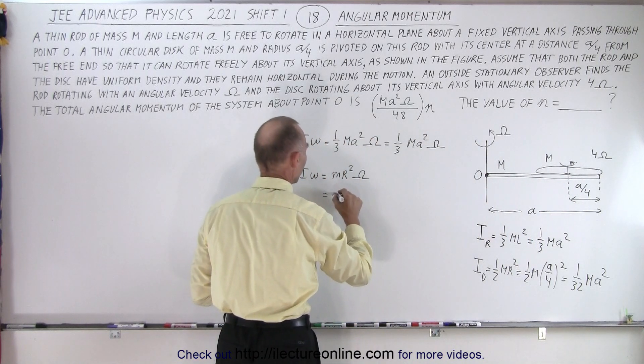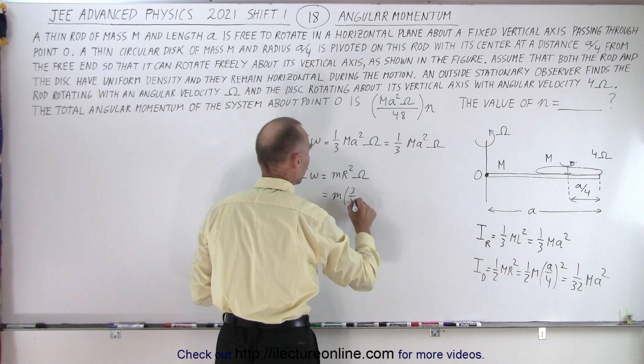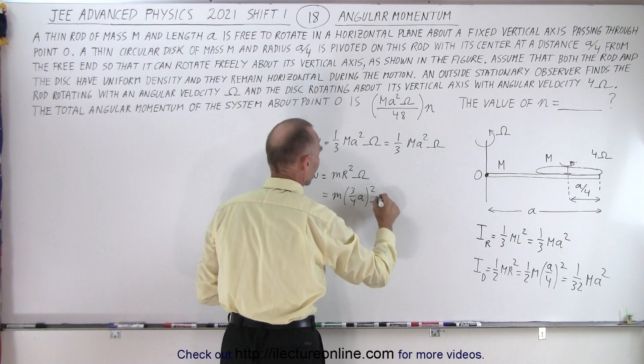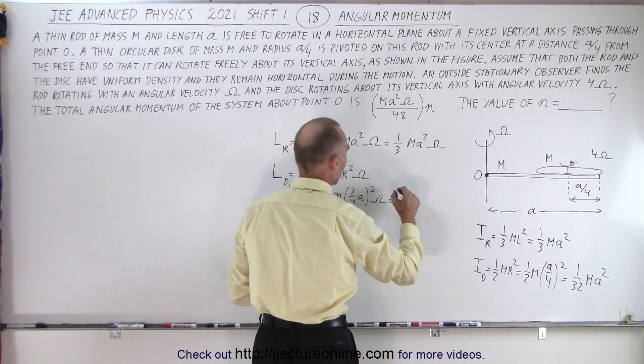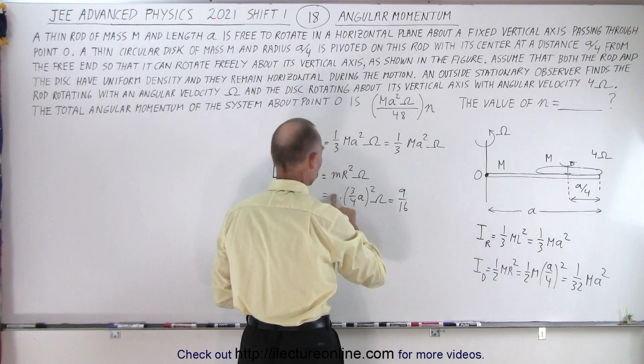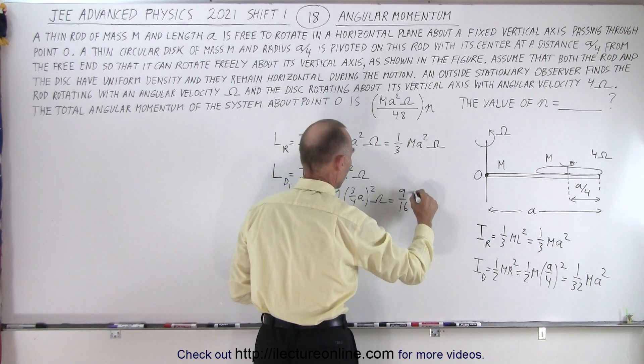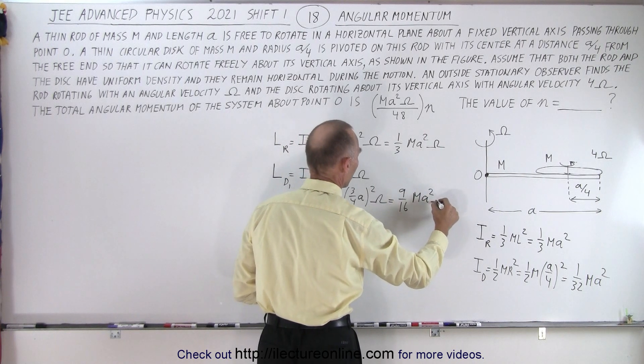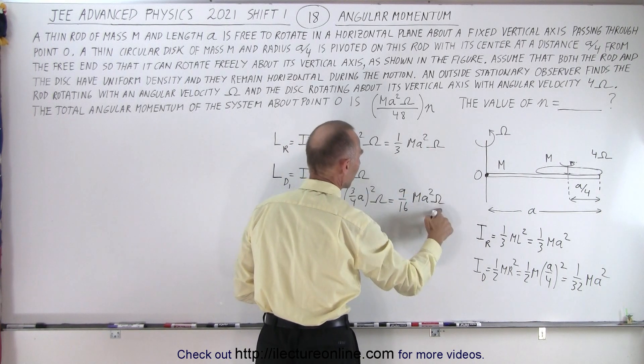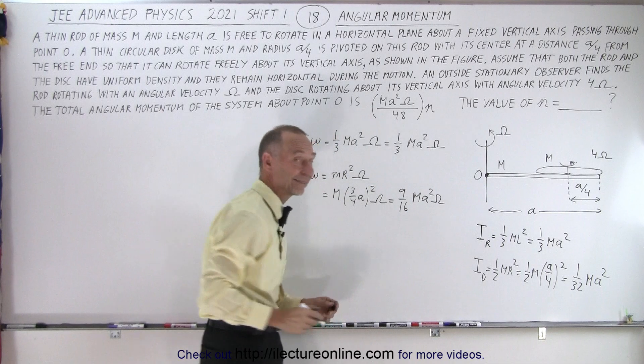So in this case, that is equal to m times 3 over 4 a squared times omega which is equal to 9 sixteenths and I'll call this a big M because that's the mass of the disk. So it would be m a squared omega. So there we have that m a squared omega again. In this case, we have 9 sixteenths.